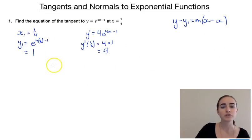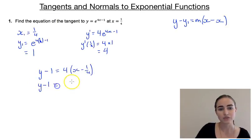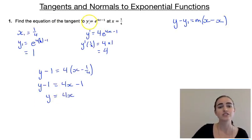So now that we know those values, we can use that form. So we'd have y minus 1 equals 4 outside of x minus a quarter. So we'll have y minus 1 equals 4x minus 1, and then we can just rewrite it. So y equals 4x. All right, so this is the equation of the tangent to this line at x equals 1 quarter.